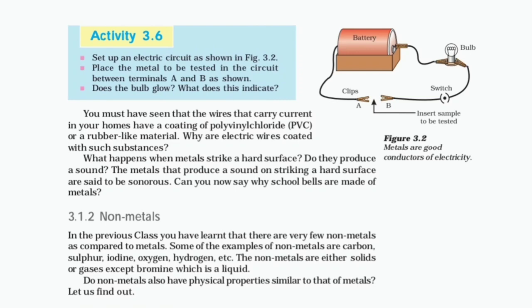Non-metals: In the previous class you have learned that there are very few non-metals as compared to metals. Some examples of non-metals are carbon, sulfur, iodine, oxygen, hydrogen, etc. The non-metals are either solids or gases, except bromine which is a liquid. Do non-metals also have physical properties similar to that of metals? Let us find out.